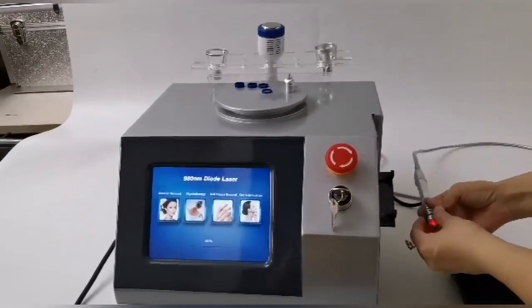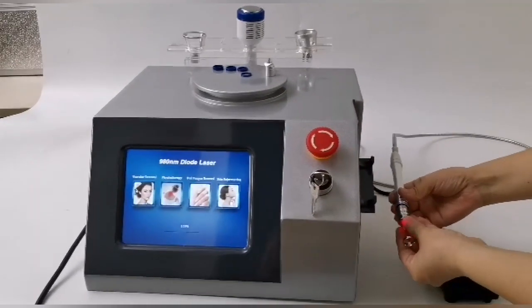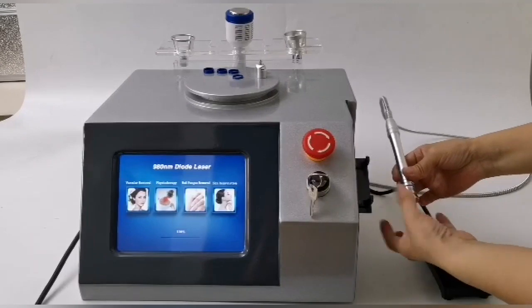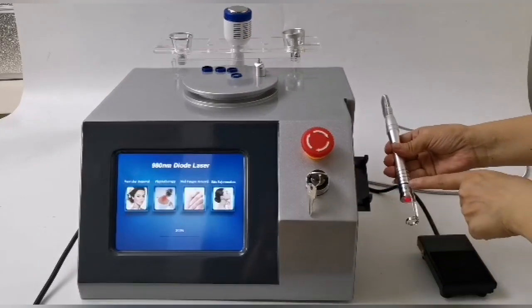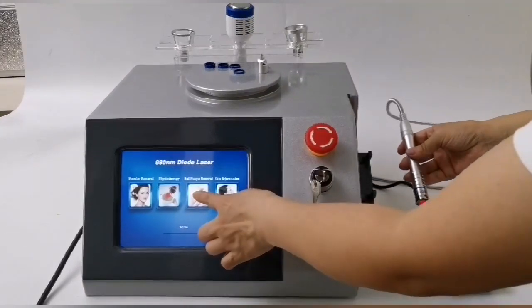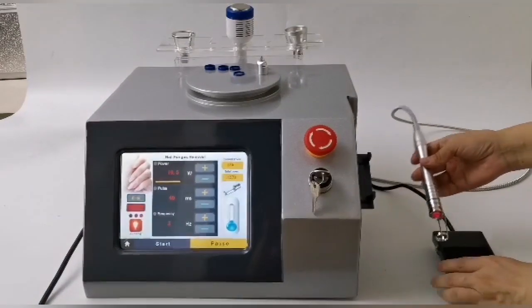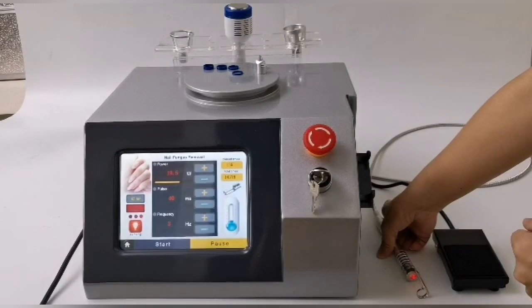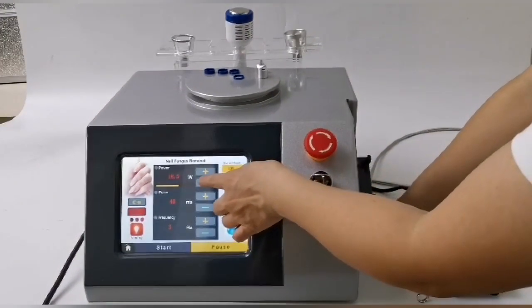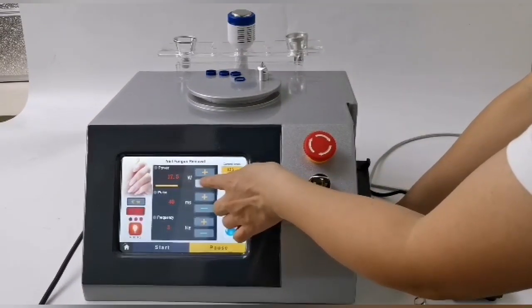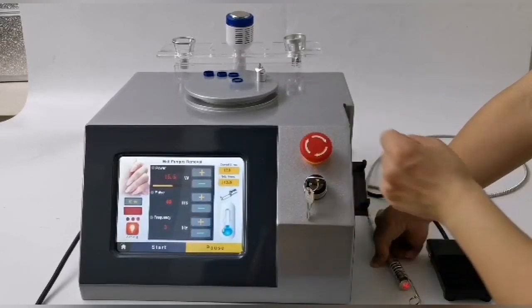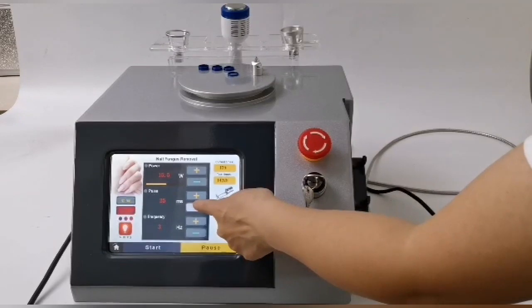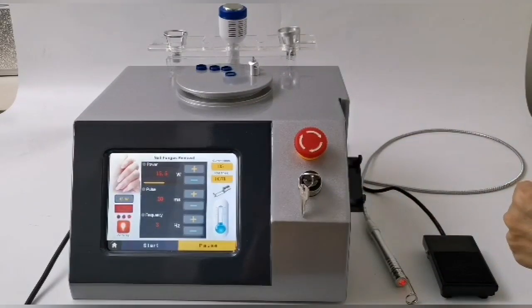When removing nail fungus, put on the nail fungus physiotherapy pad. Use 0.2mm focusing ring and tighten. Pulse and CW mode can be selected according to needs, and pulse mode is commonly used. The power value usually ranges from 15W to 25W. Pulse width is usually between 20ms and 40ms.